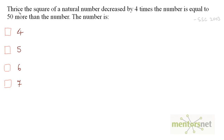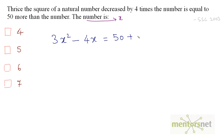Let us solve the final question. Thrice the square of a natural number, decreased by 4 times the number, is equal to 50 more than the number. Let the number be x. So 3x² - 4x = 50 + x. Bringing x to the left: 3x² - 4x - x = 50, giving 3x² - 5x - 50 = 0.